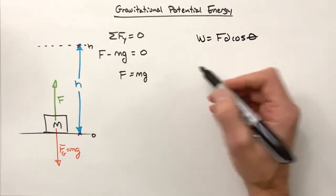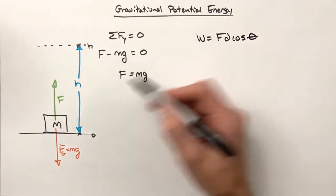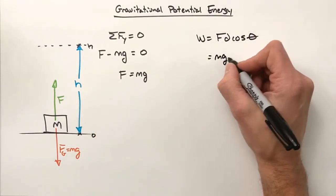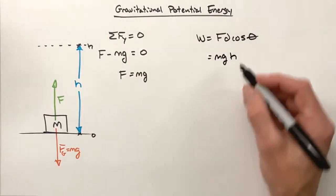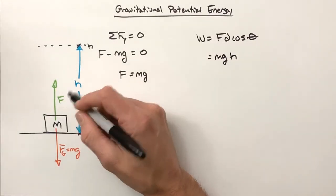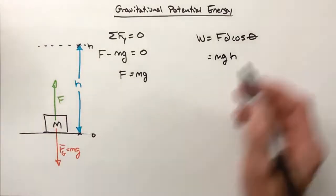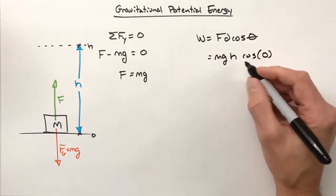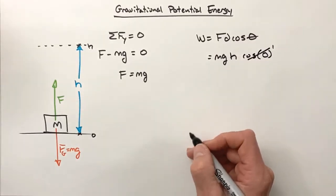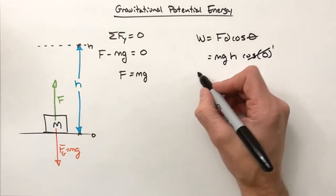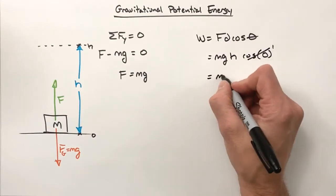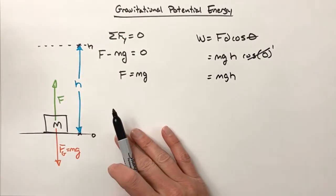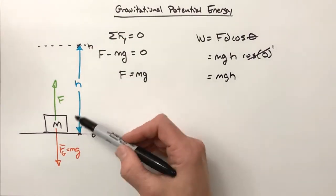Now remember, we can look at work as being defined as F d cosine theta. This is a constant force, so we don't need to get into any fancy math here. We have this force F upward that we know is mg. We have a displacement that is h, and the angle between these two, because the force is straight up and the displacement is straight up, is going to be zero. Well, the cosine of zero is one, so ultimately in lifting this box we've done some work that is equal to mgh.